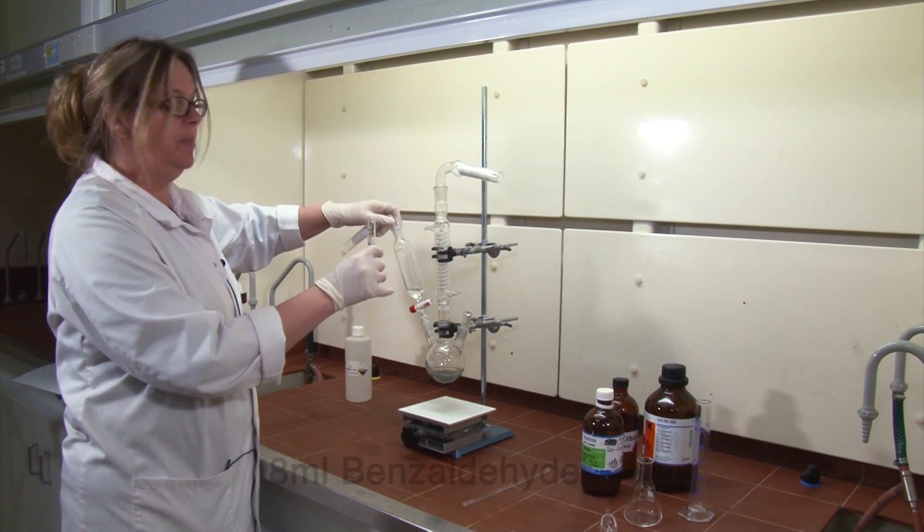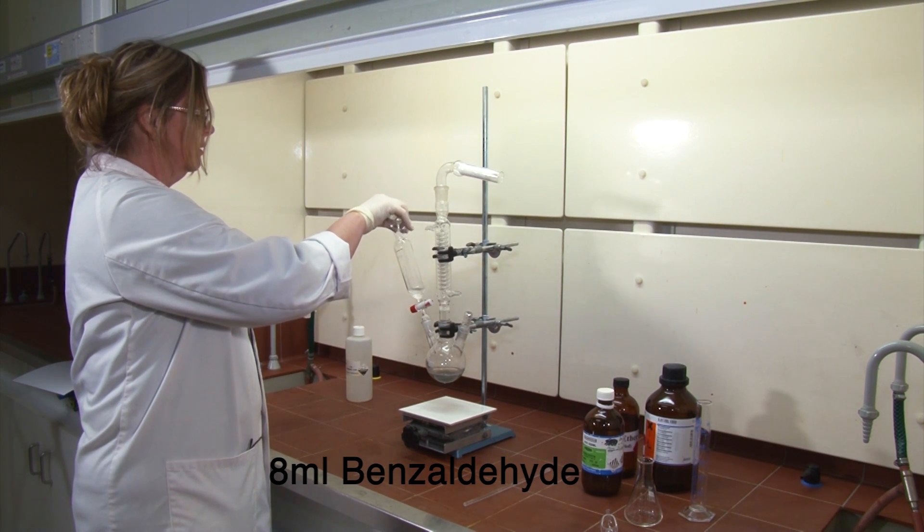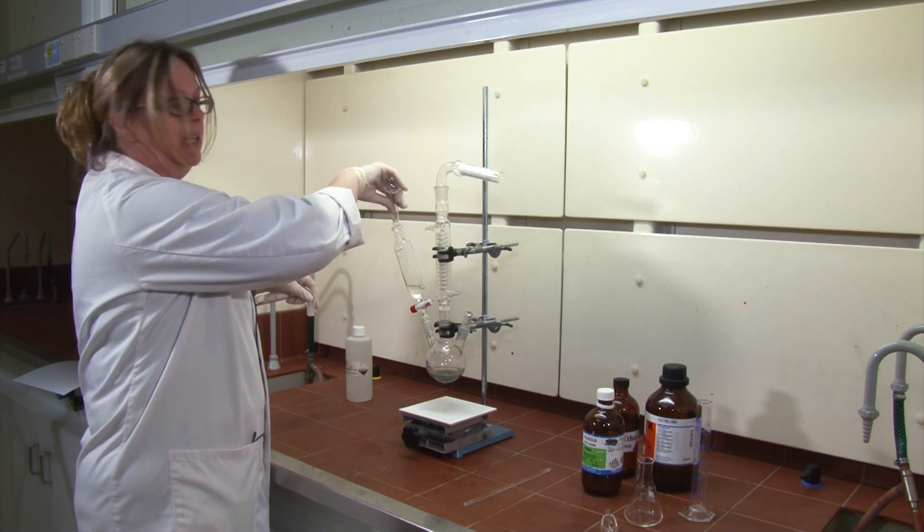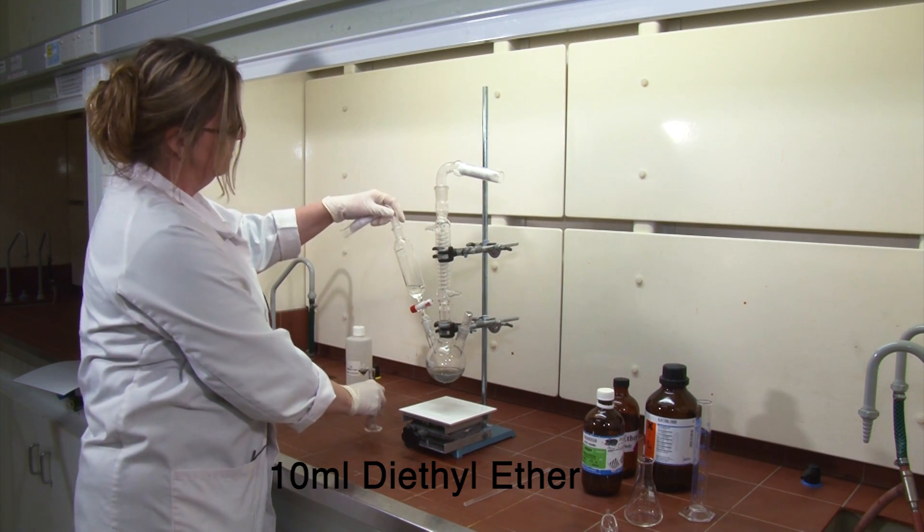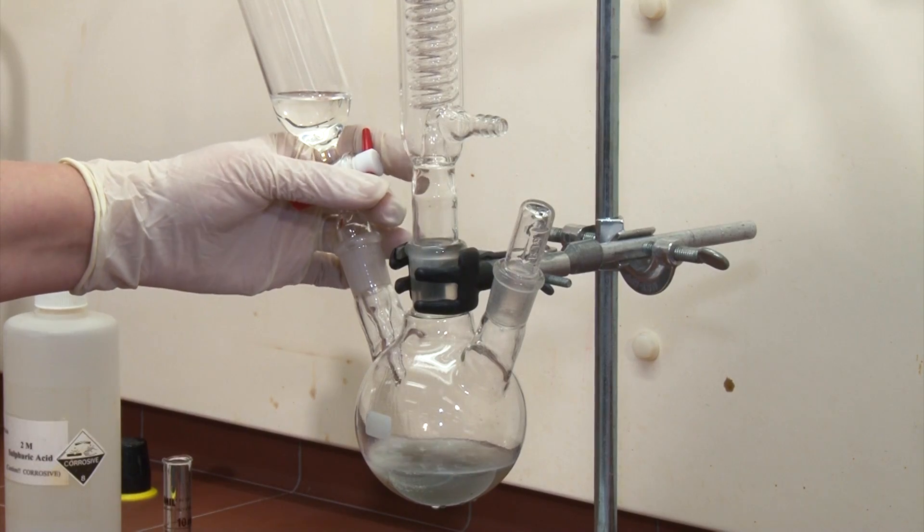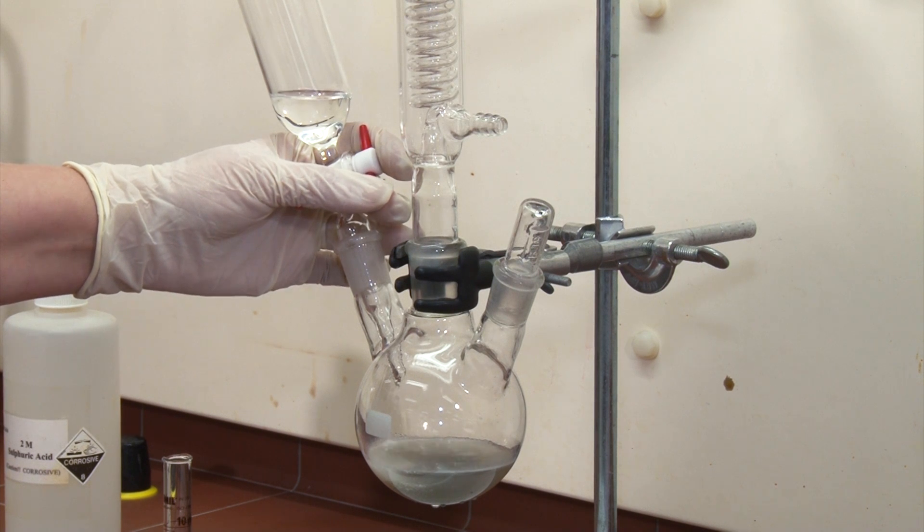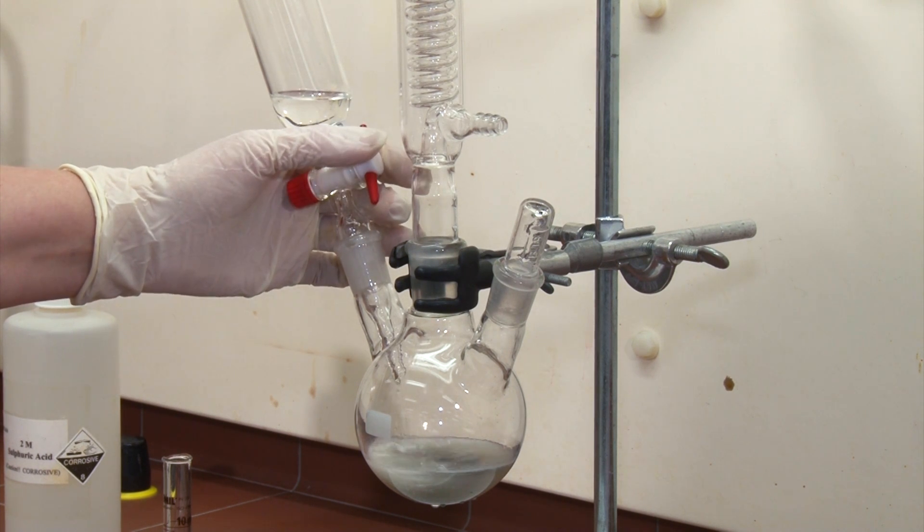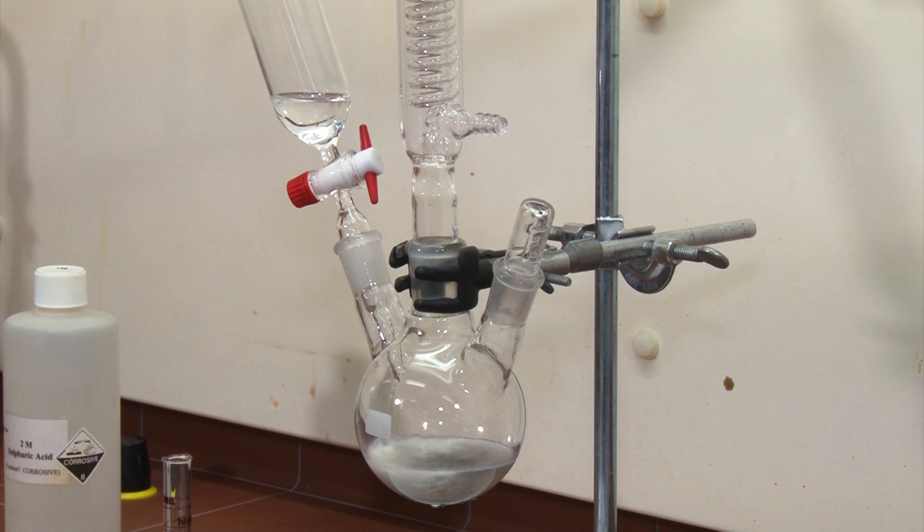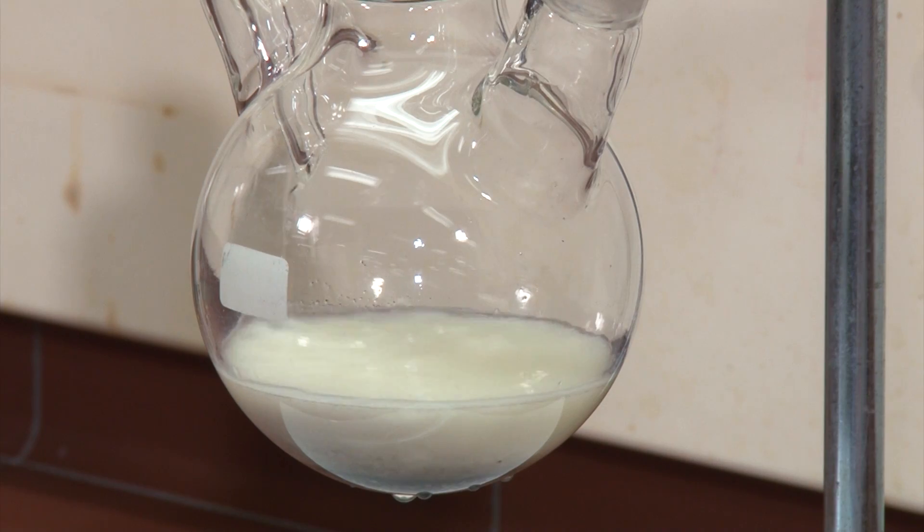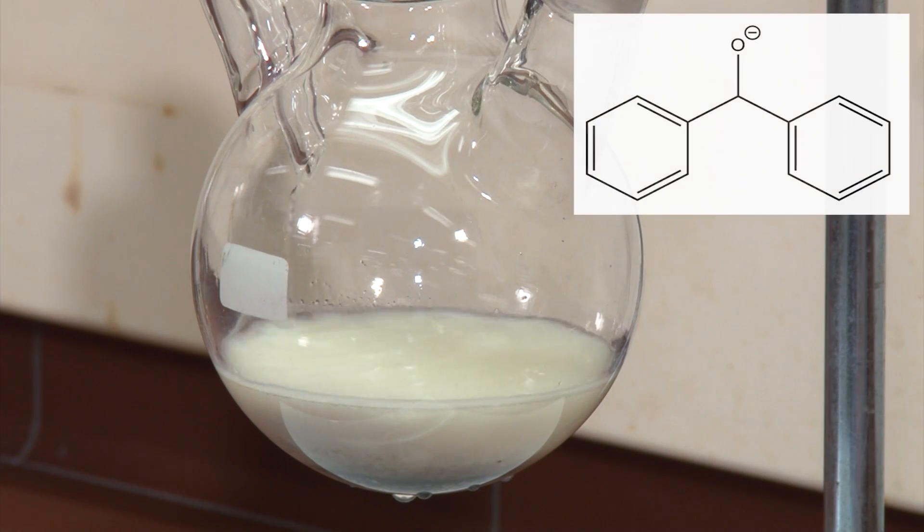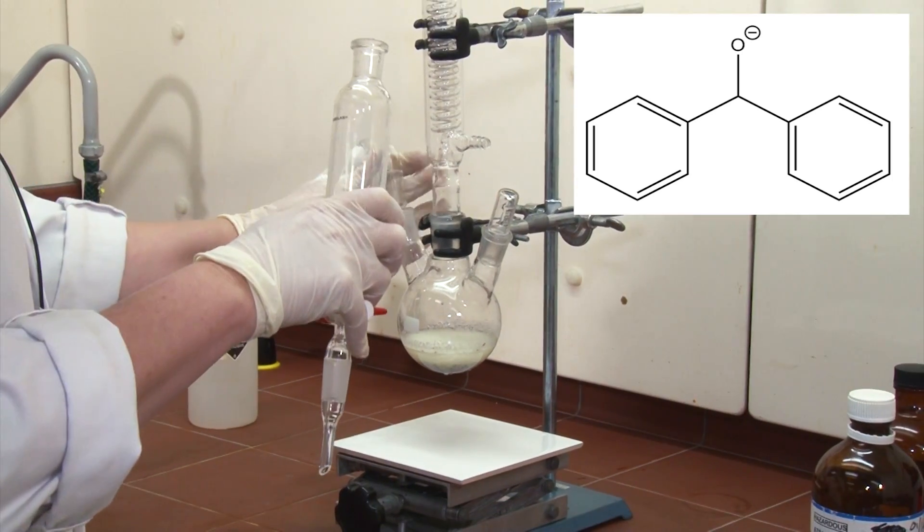I'll put 8 ml of benzaldehyde in the separating funnel together with a little bit of ether, and slowly add it into the reaction tube. As you add the benzaldehyde, the alkoxide ion is going to form which is quite insoluble in ether, and it looks like a white powder. Once all the benzaldehyde is added, take off the dropping funnel.